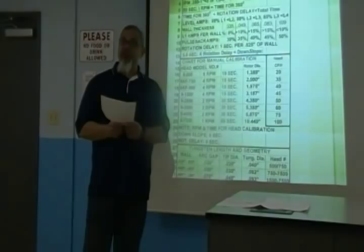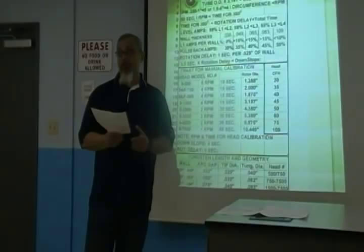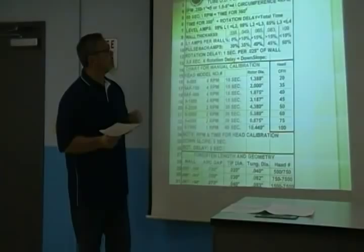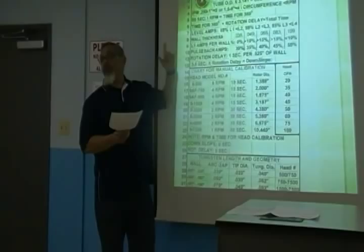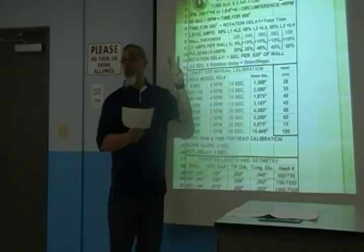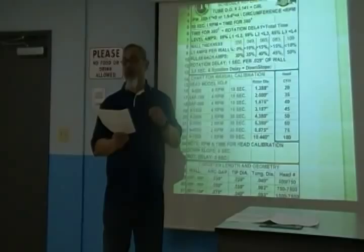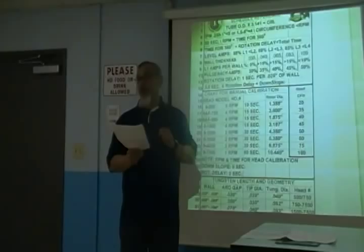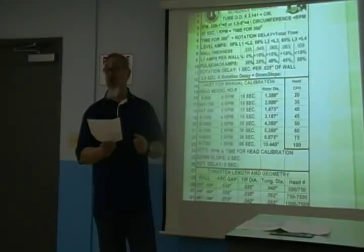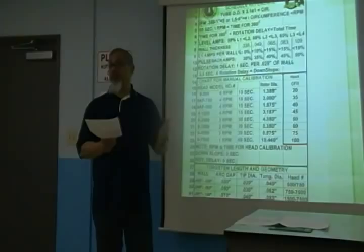Another piece of information you'll need from the key formulas is IPM, which stands for inches per minute. Inches per minute is based off one of the three essential variables. The three essential variables you need to know before you start a weld program are: the size of tube you're going to be welding — the OD; the wall thickness of that tube; and what type of weld head you're going to be using. Those three essential variables must be given to you before you even start.